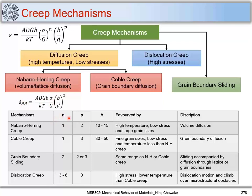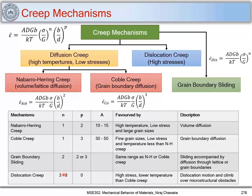Dislocation creep occurs at temperatures lower than Coble creep, with dislocation-based mechanisms such as cross-slip and climb. Writing the specific relations: for Nabarro-Herring creep, strain rate is proportional to sigma (n=1) and inversely proportional to d^2 (p=2). For Coble creep, n=1 remains the same but p=3, making Coble creep more sensitive to grain size than Nabarro-Herring creep. For dislocation creep, p=0 so it is independent of grain size, while n ranges from 3 to 8, from which we can identify the glide or climb mechanisms operating.